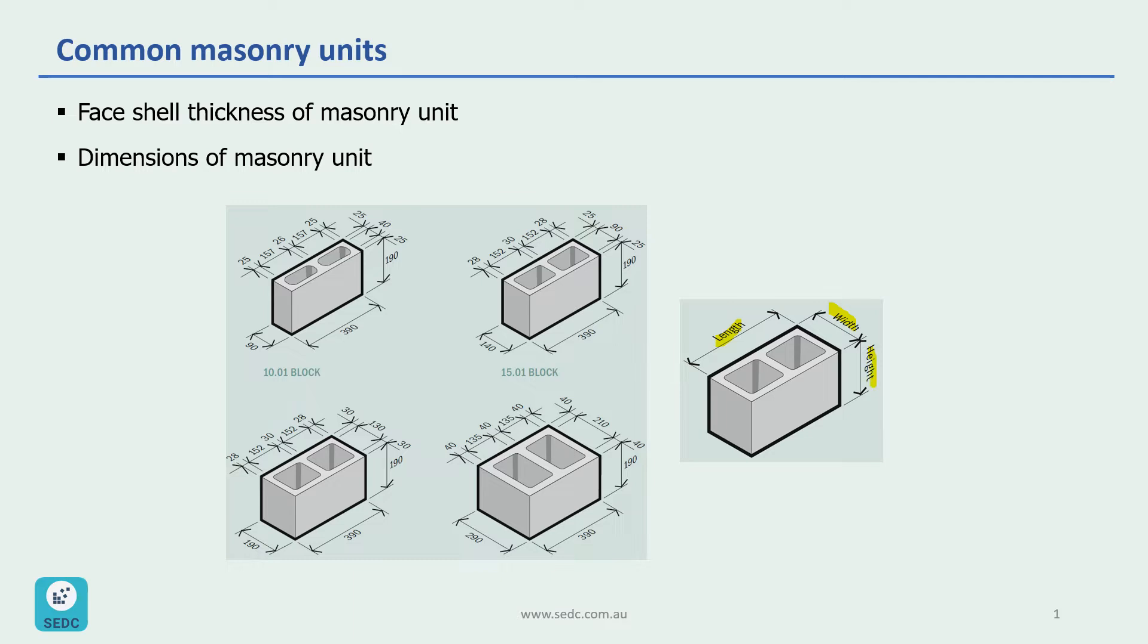Usually we have four different masonry units which have different widths. Most commonly used masonry units in Australia are 190 blocks and 140 blocks, but we also have 90 and 290 blocks.